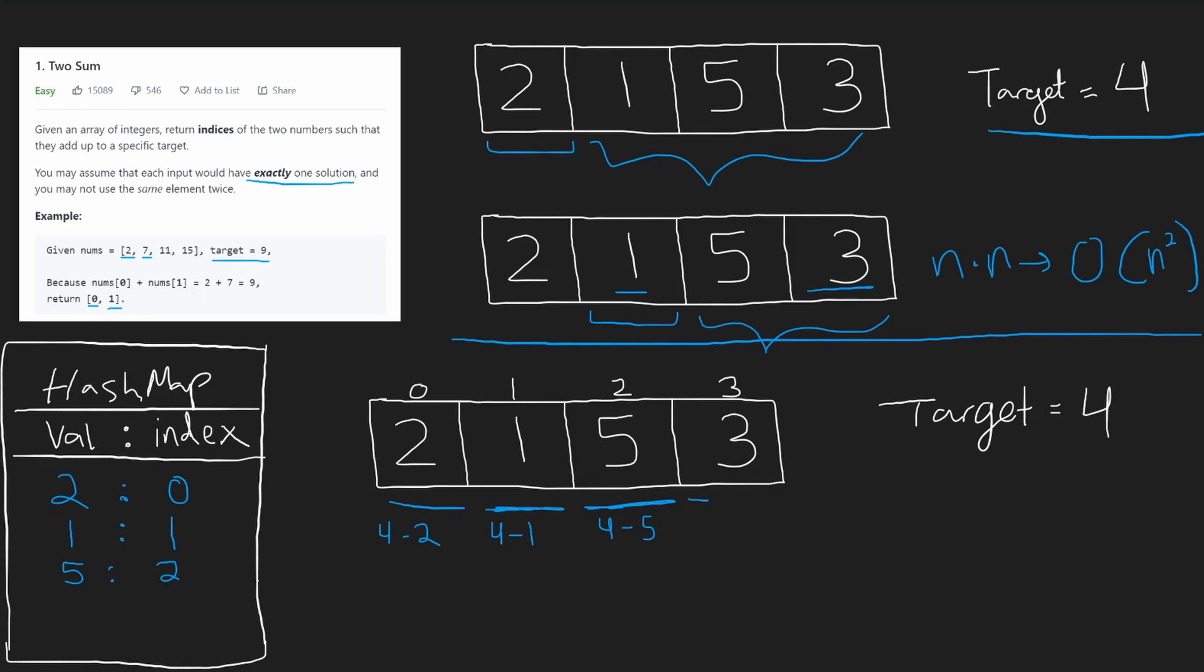And we move to the last value in the array, 3. We check does 4 minus 3 exist in our hash map. Now that's 1, so we see it does exist, right? Right over here. The value exists, and its index is 1. So now we found our two values that sum to the target, and we want to return their indexes, their indices, which are going to be 1 and 3.